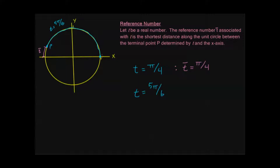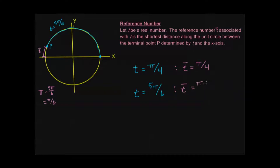To calculate t-bar: if I went from my initial point all the way to the x-axis, that would be a total distance of π. I've already gone 5π/6, so if I subtract that, it gives me the remaining distance to the x-axis. So π minus 5π/6 gives me π/6, because π is the same as 6π/6. So if t is 5π/6, the reference number t-bar is π/6.